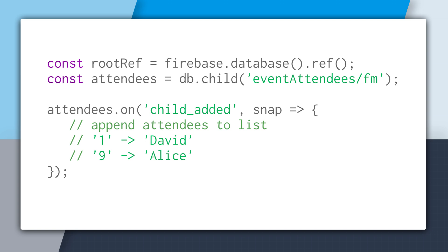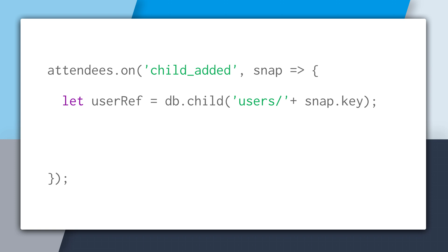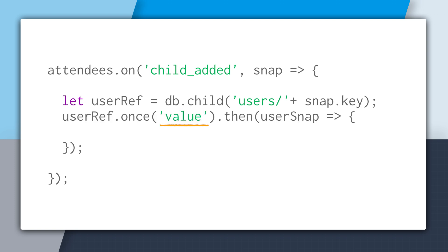To get all the other user data, we then have to do a join. We'd start by creating a reference to that user's location inside of the callback. We can create a user reference using the snapshot's key, because the snapshot key is the UID for that user. Once we've created this reference, we can use the once method, specify the value event, and return the user in the promise. This gives us back the specific user data for all users going to this event.